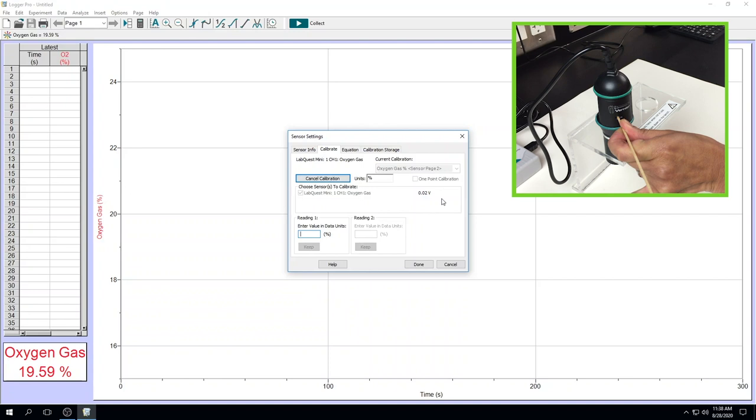It's okay if it's close to zero. In this particular case, it's 0.02 volts. That is completely acceptable. Under reading one, enter zero and keep. At this point, release the wooden stick from the oxygen sensor. You will see the voltage on your screen bounce back to the original volume.